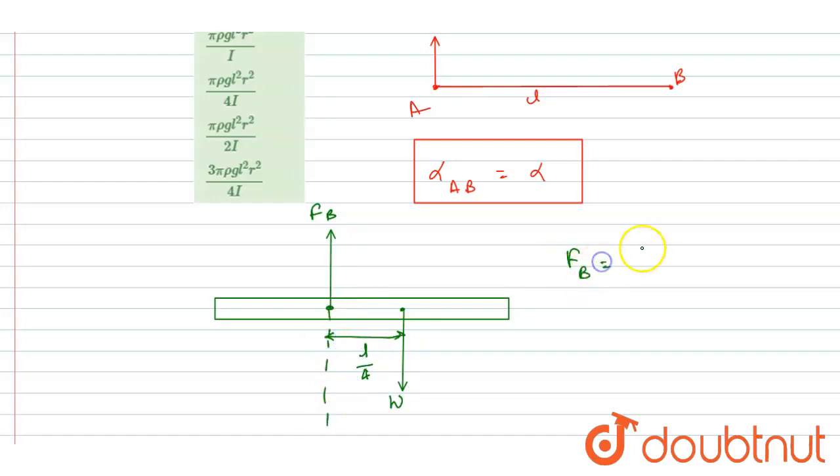So buoyant force equals the density of the liquid times volume submerged times g. The volume submerged is the total volume only, so I'll write pi R squared L. That's the volume submerged.